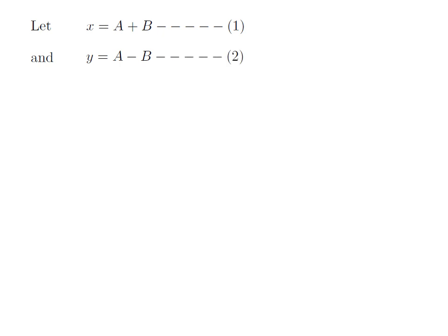Let x be equal to a plus b, and y be equal to a minus b, where a and b are real numbers. Let's label these two expressions as equation 1 and equation 2 respectively. So sin of x plus sin of y is equal to sin of a plus b plus sin of a minus b, as x equals a plus b and y equals a minus b per our assumption.